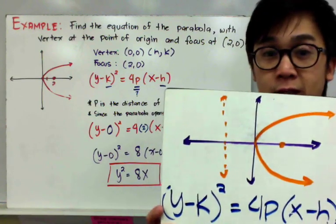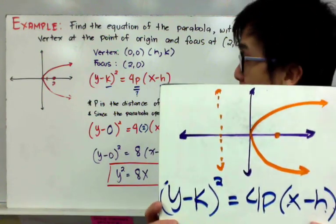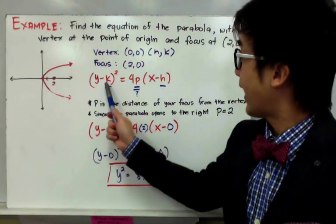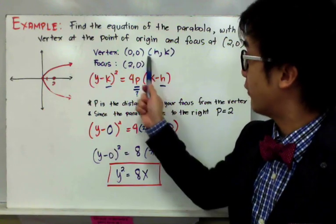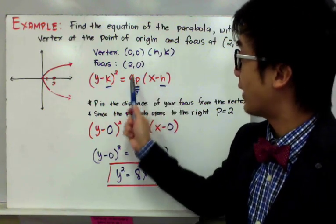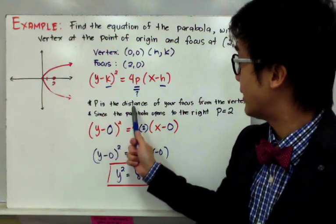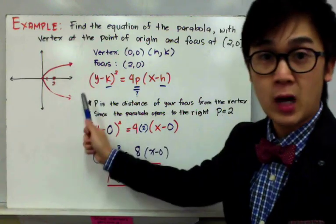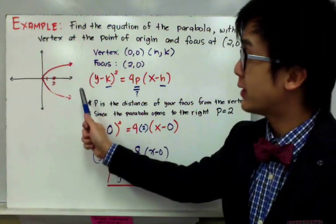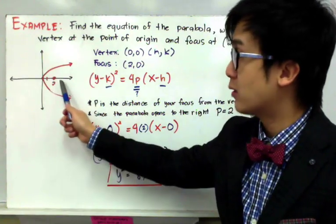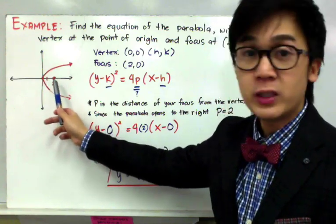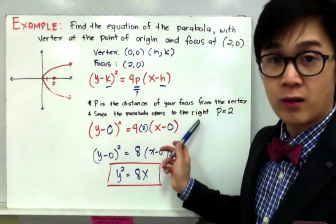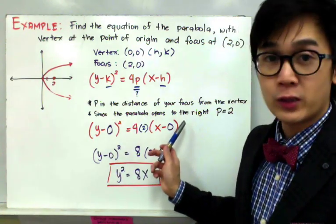All we need to do now is replace the values in our equation. We will replace k and h — which is essentially your vertex — and we need to find the p value. The p value is the distance of your focus from the vertex. Since you already sketched the graph, count the number of units from the vertex to the focus: that's 2 units. Since the parabola is opening to the right, the p value is positive.